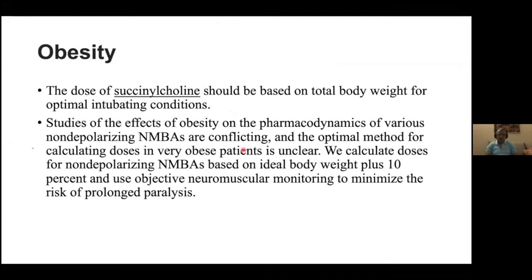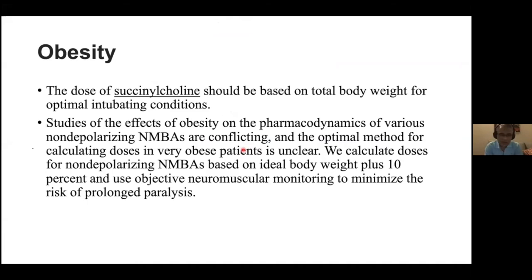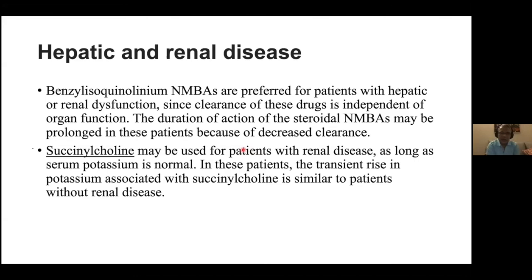In obesity, the dose of succinylcholine should be based on total body weight for optimal intubating conditions. For non-depolarizing agents, results are conflicting; the optimal method for calculating doses in very obese patients is unclear, but we calculate based on ideal body weight plus 10%. In hepatic and renal diseases, isoquinolinium drugs are preferred since clearance is independent of organ function. Cisatracurium is more preferable than atracurium here as atracurium has more side effects.